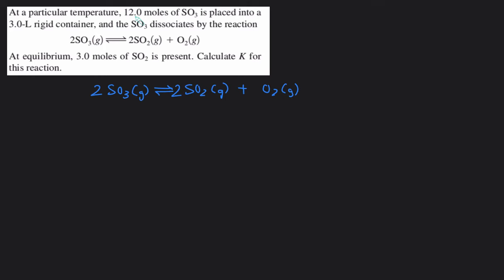2SO3 gas in equilibrium proceeds to SO2 gas plus O2 gas. Again, because we're given an initial condition and an equilibrium condition, we can set up an ICE table.